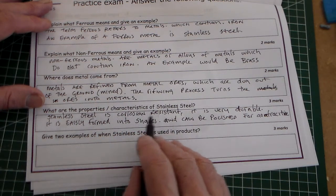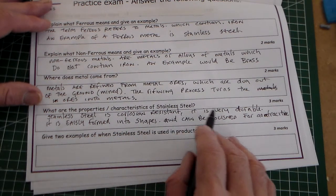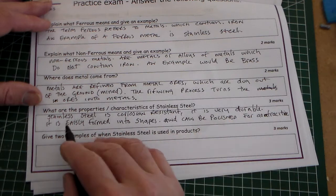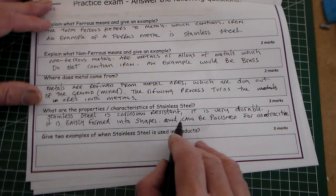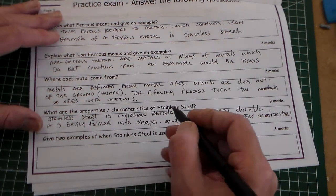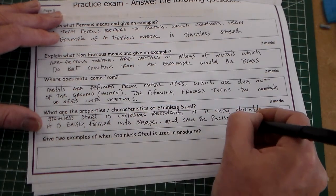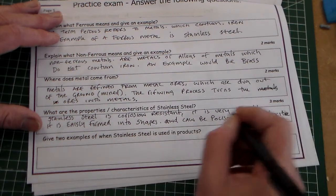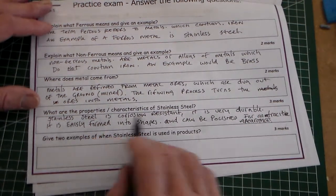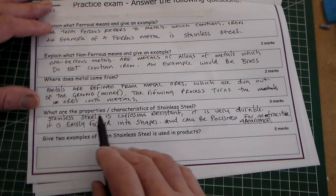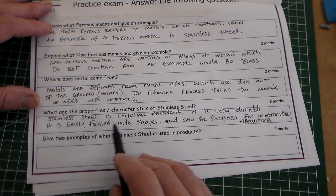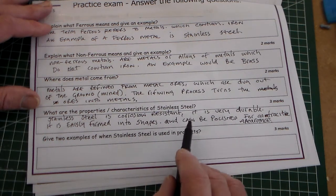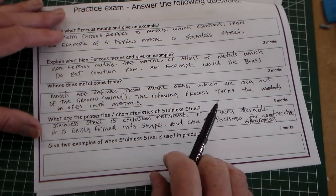Stainless steel is corrosion resistant, it is very durable, it is easily formed into shapes and can be polished for an attractive appearance. Got there in the end. Okay, so that is, I think that would give us the three marks. We've got one, two, three, we've probably got four. But certainly that would get us the three marks on stainless steel.